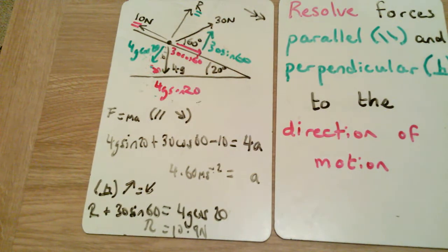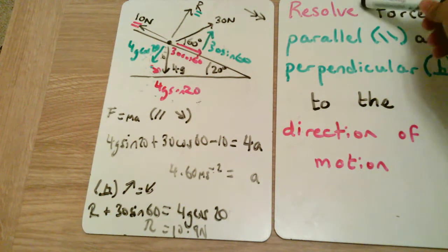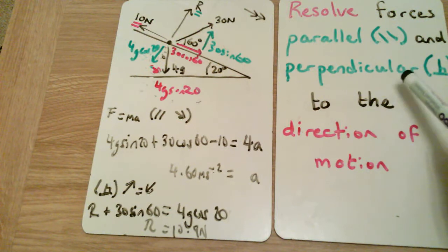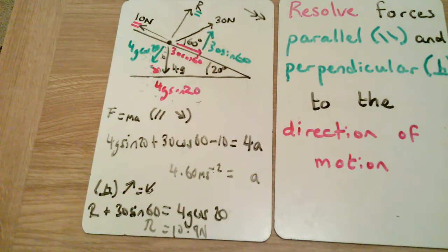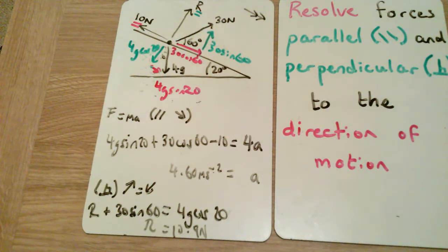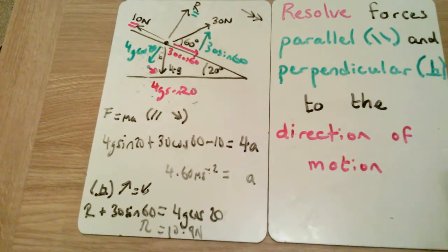The process throughout is the same: first label your diagram and make it large enough to resolve forces clearly, both parallel and perpendicular to the direction of motion. Then use F = ma parallel to the direction of motion, and balance the forces perpendicular to the surface to find R. I hope that's made sense — if not, please let me know or comment below.